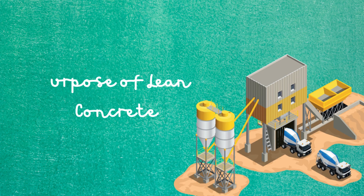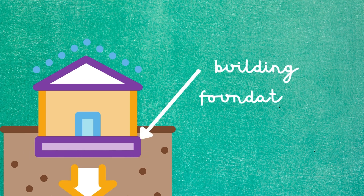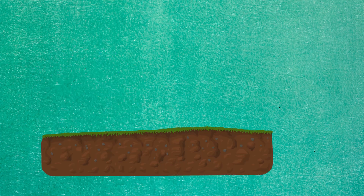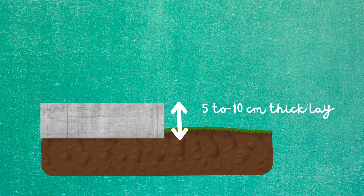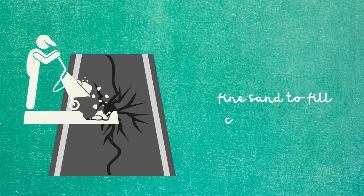What's the purpose of using lean concrete? Lean concrete helps to seal the soil and create a level surface for building foundations. A layer of concrete, usually 5 to 10 centimeters thick, is placed on top of it. Fine material, for example sand, is used to fill in cracks on a pavement or earthworks layer.